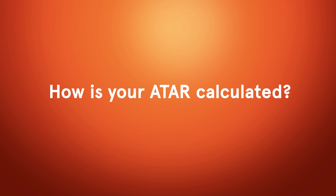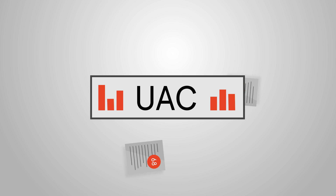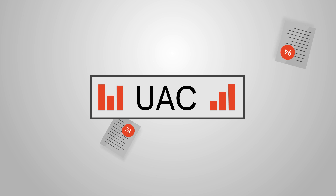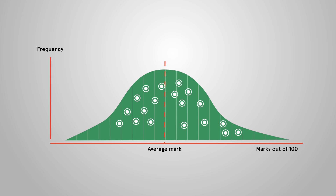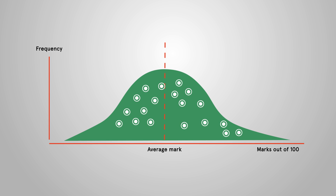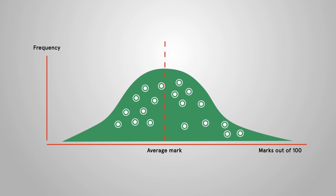How is your ATAR calculated? The Board of Studies gives the University Admissions Centre, or UAC, all the raw unbanded HSC marks. But comparing across courses is like comparing apples and oranges — we want to compare apples with apples. To help work out how one student compares to another, UAC starts by giving all courses the same average mark and the same spread of marks, which shows how far marks are scattered on either side of the average.